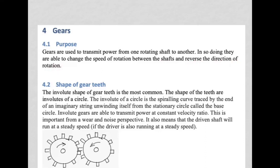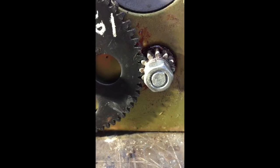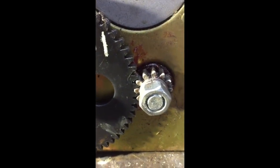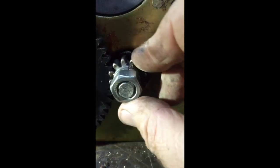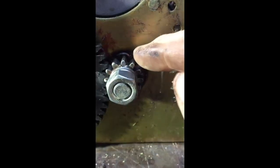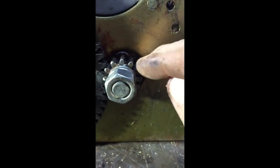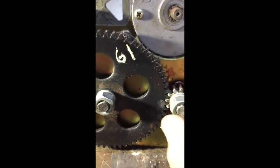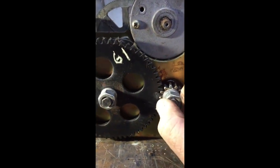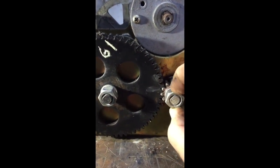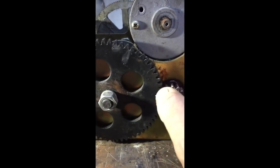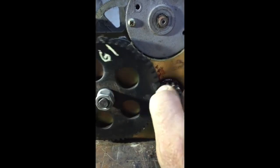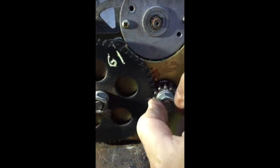Here is a set of external spur gears in mesh in a small winch. The smaller gear — the pinion — has 12 teeth and is meshing with a larger gear of 61 teeth. If the pinion rotates clockwise, the big gear rotates anti-clockwise, and the ratio of their speeds will be 12 over 61.